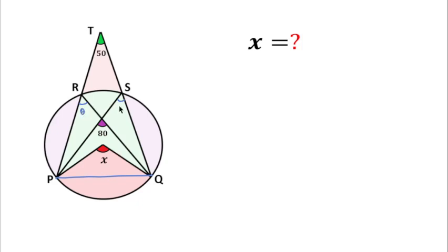Let's suppose this angle is theta, then this angle should also be theta. This angle is actually 180 minus theta, then this angle should also be 180 minus theta. This means these two angles are equal.